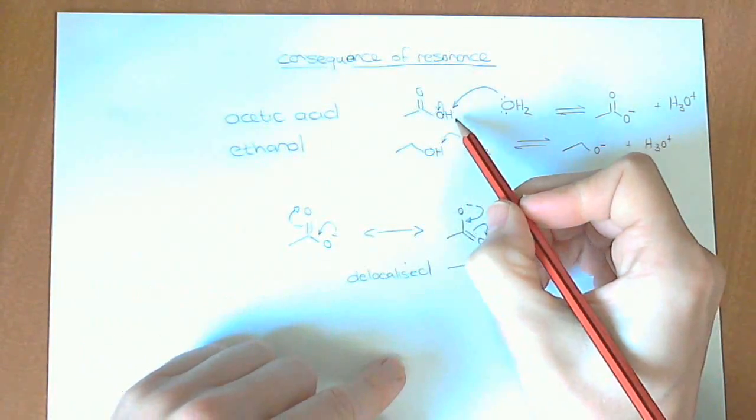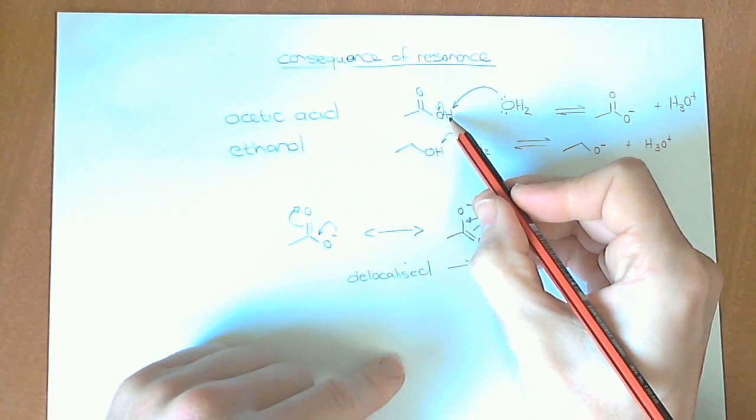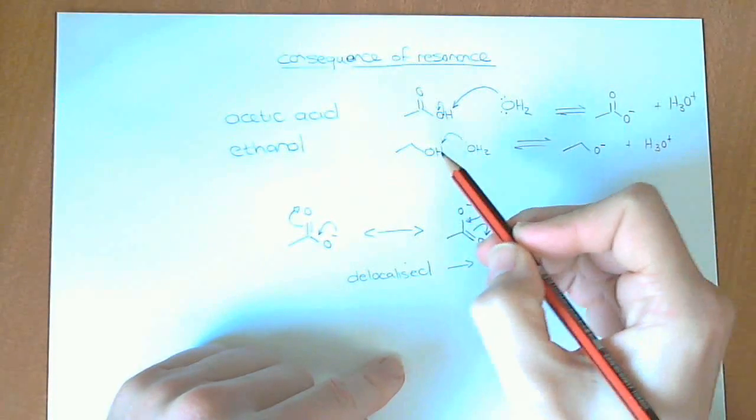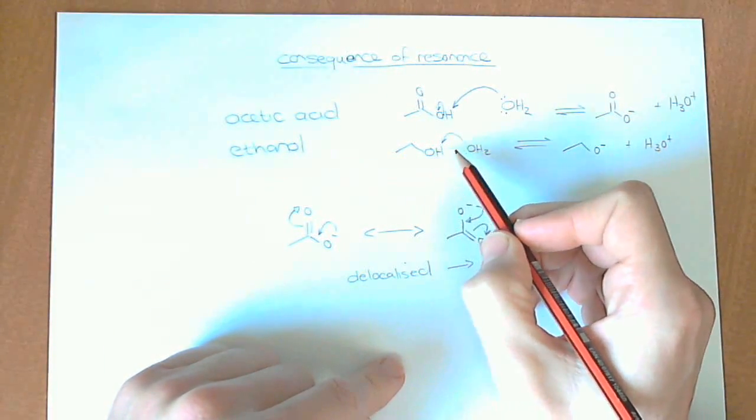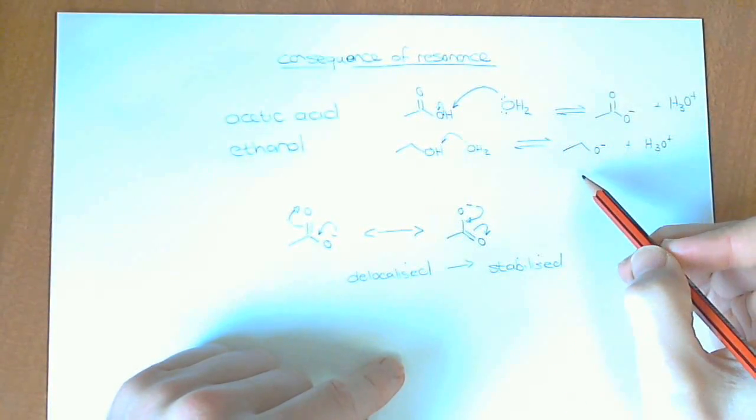Okay? So the reason that acetic acid is an acid is because by removing that proton, we get a negative charge, which is stabilized. Ethanol is not an acid because if we remove this proton, this negative charge cannot delocalize anywhere.